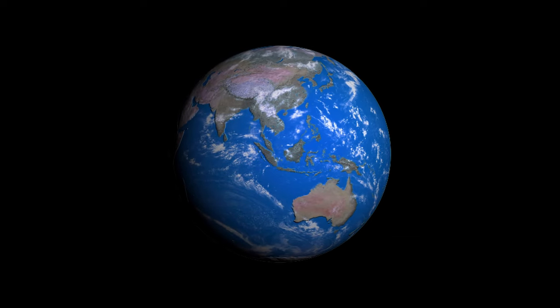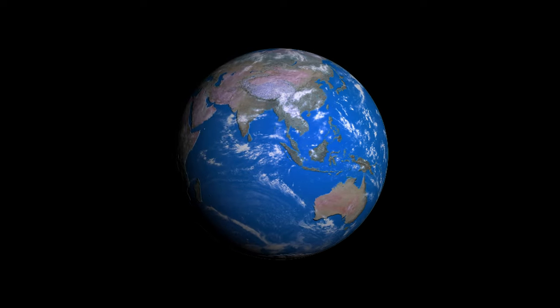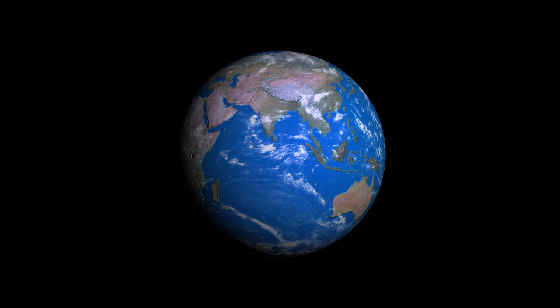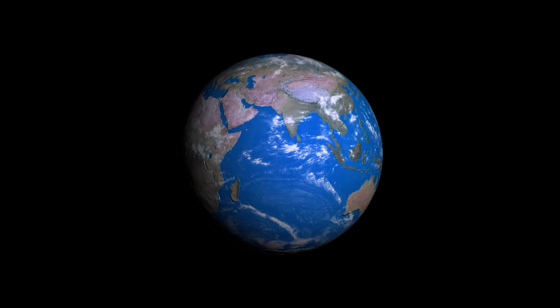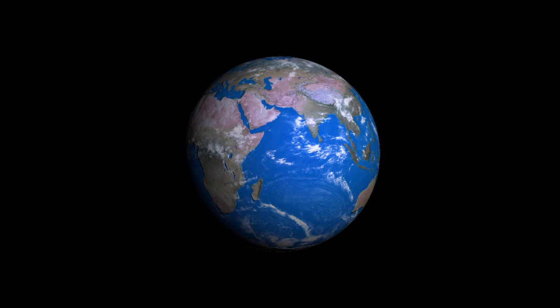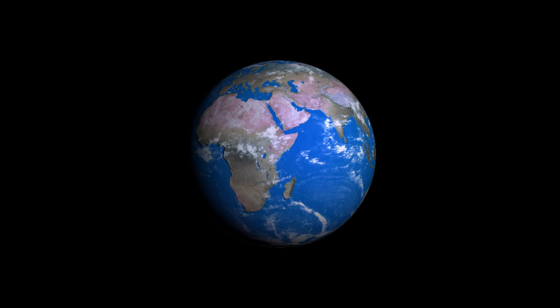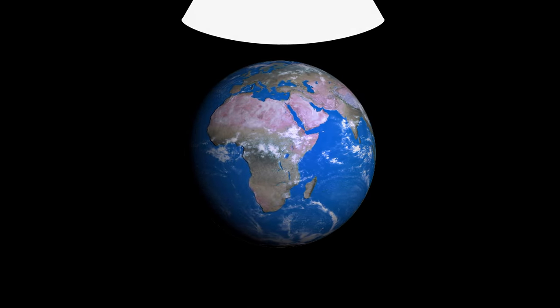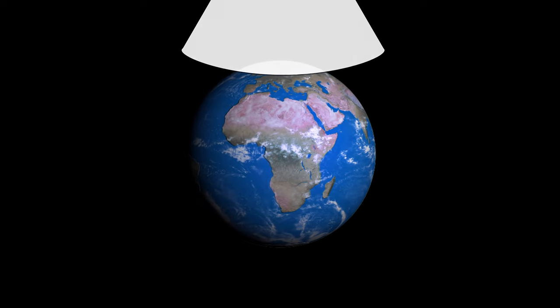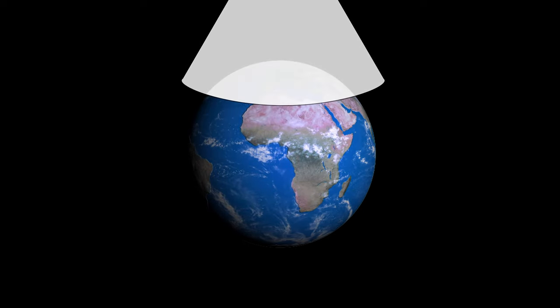Albers Equal Area Conic Projection. The Albers Equal Area Conic Projection is commonly used for displaying large countries that require equal area representation. For example, the USGS uses this conic projection for maps showing the contiguous United States, 48 states.